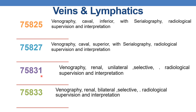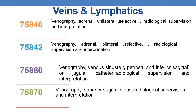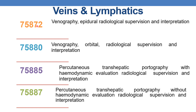CPT 75830 is venography, renal, bilateral, selective, radiological supervision and interpretation. CPT 75840 is venography, adrenal, unilateral. CPT 75842 is venography, adrenal, bilateral. CPT 75860 is venography, venous sinus — for example petrosal and inferior sagittal or jugular catheter — radiological supervision and interpretation. CPT 75870 is venography, superior sagittal sinus, radiological supervision and interpretation. CPT 75872 is venography, epidural, radiological supervision and interpretation.